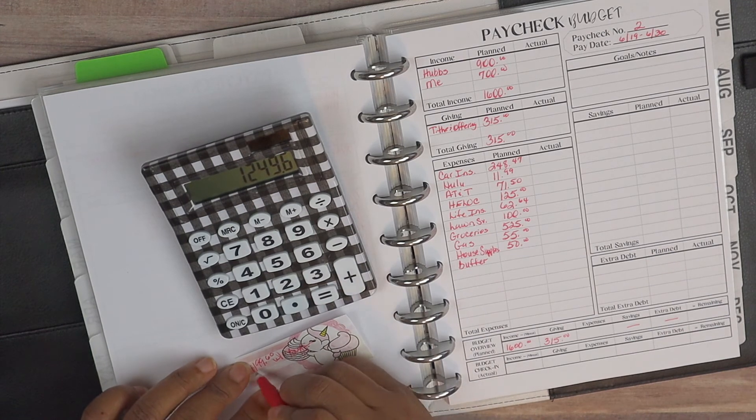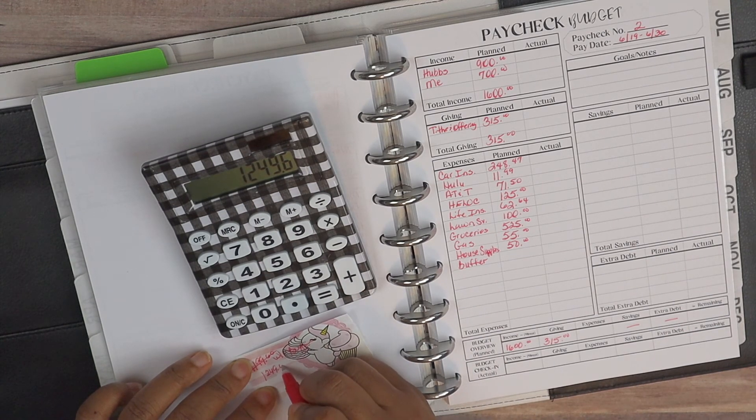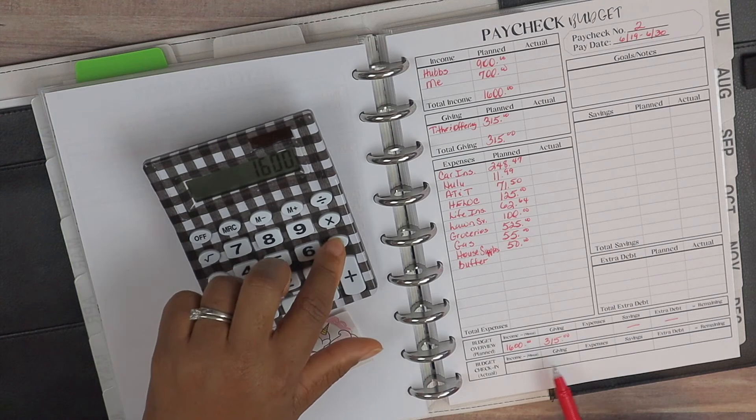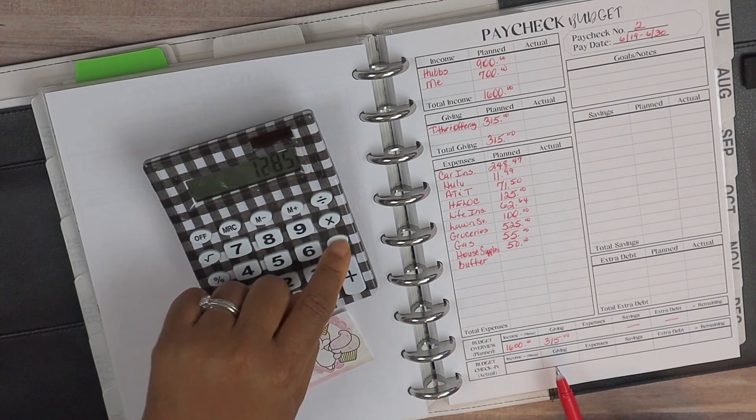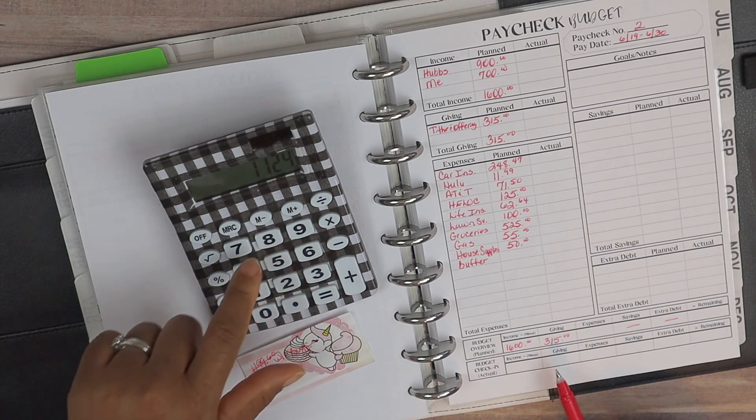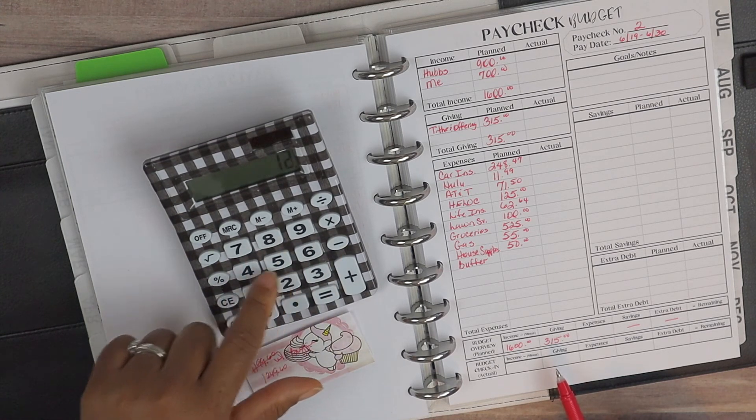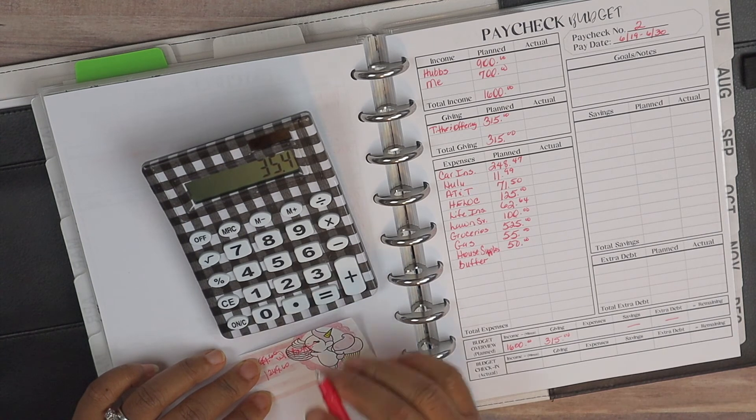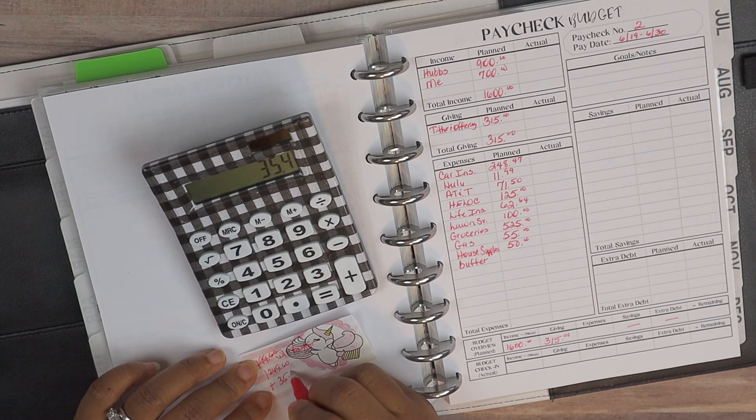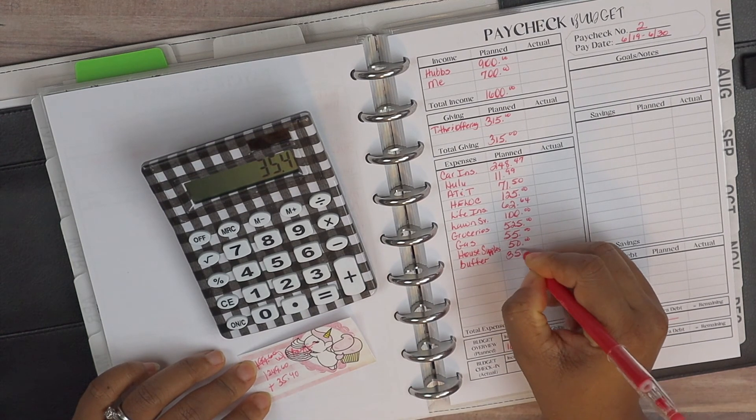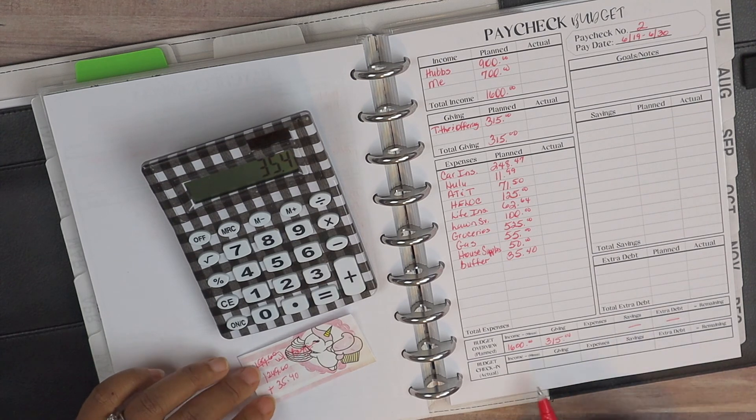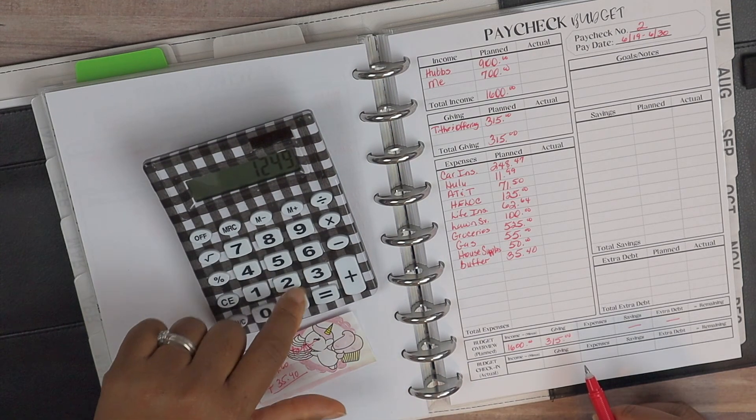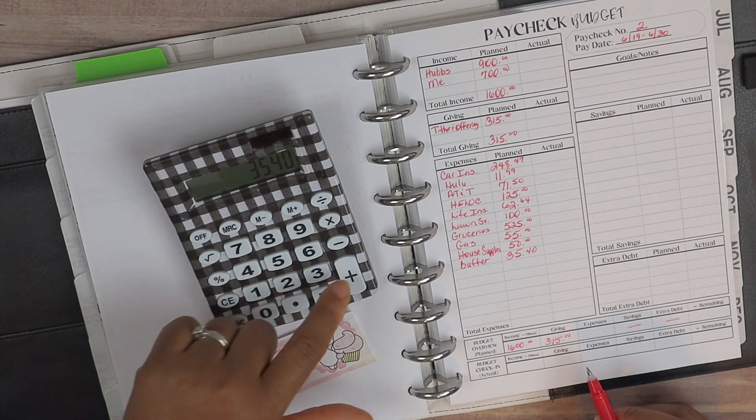Alright, so our expenditures are actually $1249.60 without the buffer, so now we can go ahead and crunch these numbers properly. So $1600 minus $315, and then minus $1249.60, so that does leave us with $35.40. So we can add that as the buffer. I'm going to put that here.